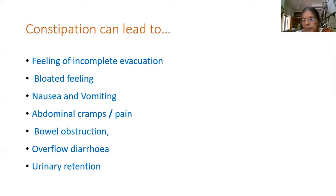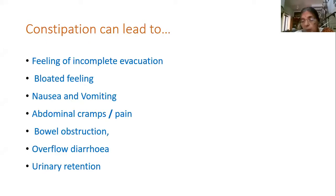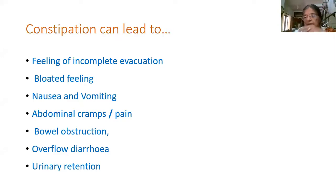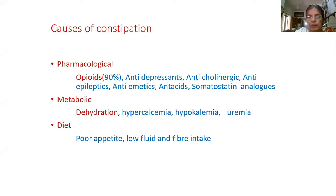Constipation can lead to a feeling of incomplete evacuation - the patient feels they need to move their bowel again. There's also a bloated feeling due to irregular bowel movement, and the patient can start getting nausea, vomiting, abdominal cramps, and pain. They can even have overflow diarrhea. Because the rectum and urinary bladder are close by, hard fecal matter collected in the rectum can also lead to urinary retention.